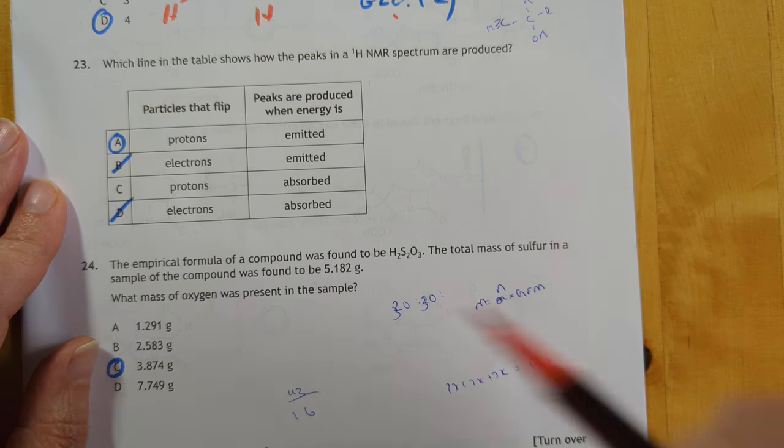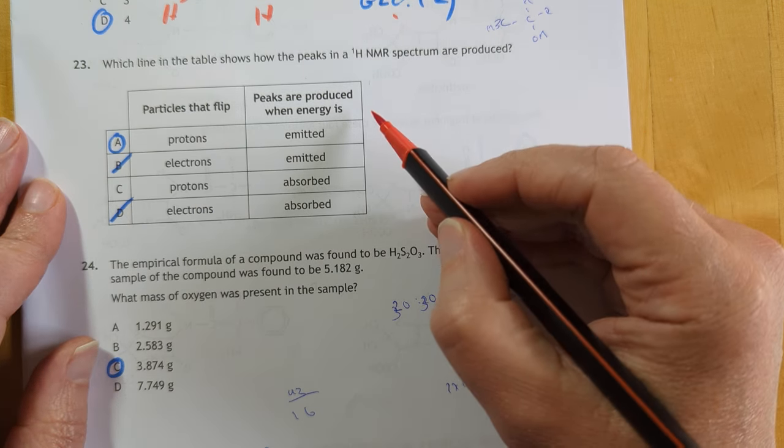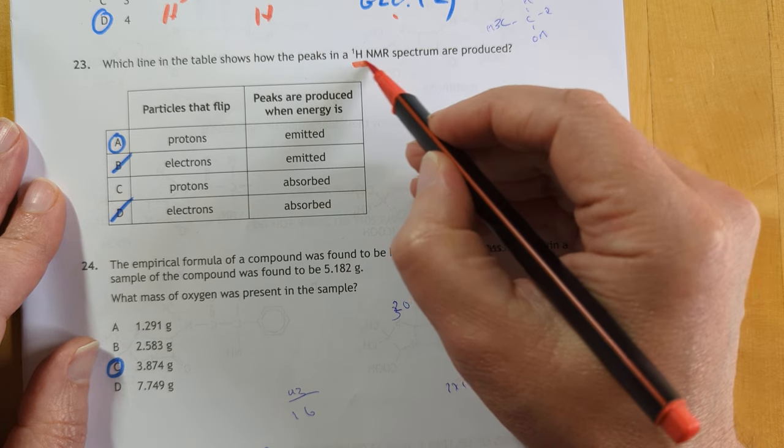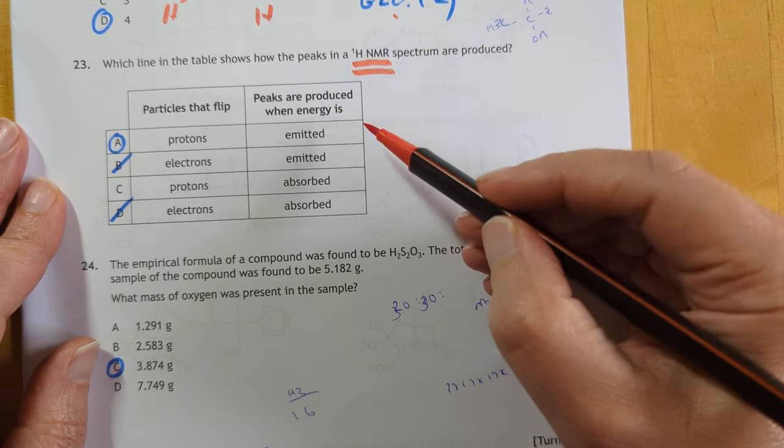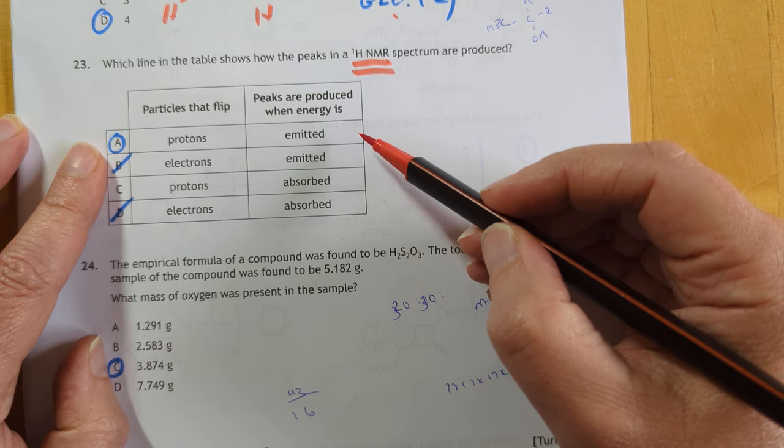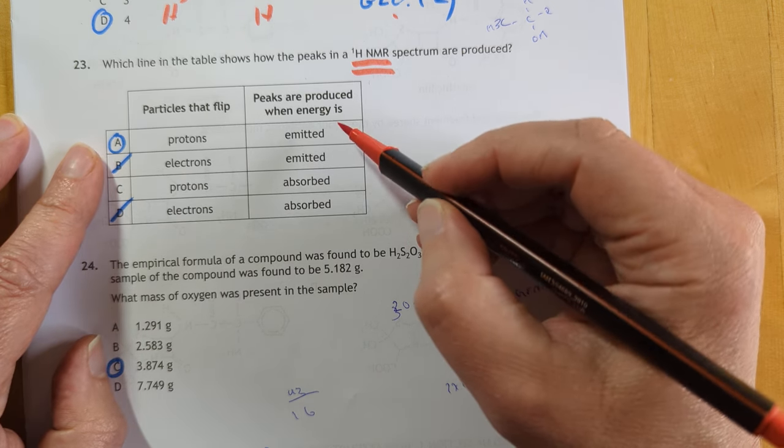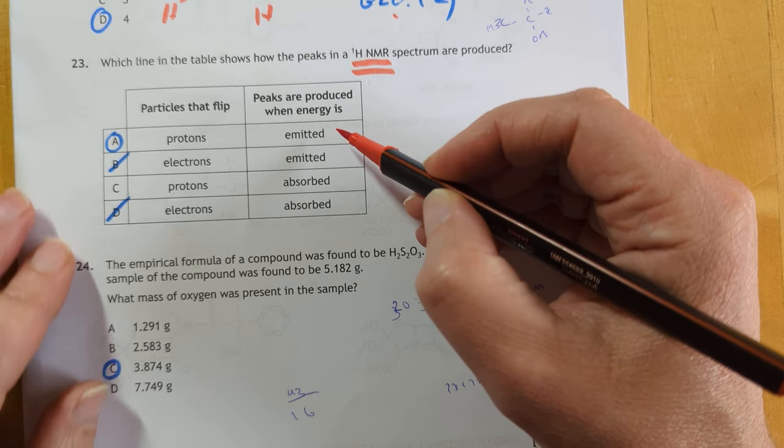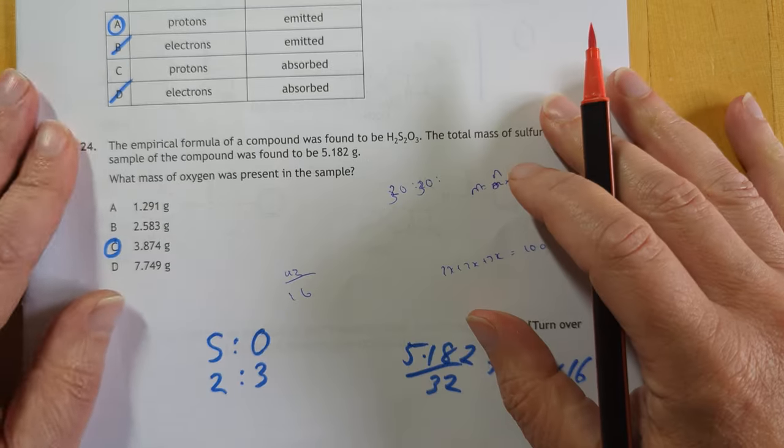23. That's a bit of a nasty one. It involves a lot of nuts and bolts knowledge about how NMR actually works. I did put it in my video. So, it's protons. Not electrons. And you actually produce the peaks when energy is emitted. Once they have flipped back to their ground state.